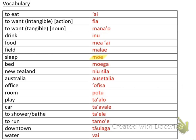Sleep is 'moe,' bed is 'moenga,' New Zealand is 'Niu Sila,' Australia is 'Ausetalia,' office is 'ofisa,' room is 'potu,' play is 'ta'alo,' car is 'ta'avale,' to shower or bathe is 'ta'ele,' to run is 'tamo'e,' downtown is 'taulaga,' and water is 'vai.'